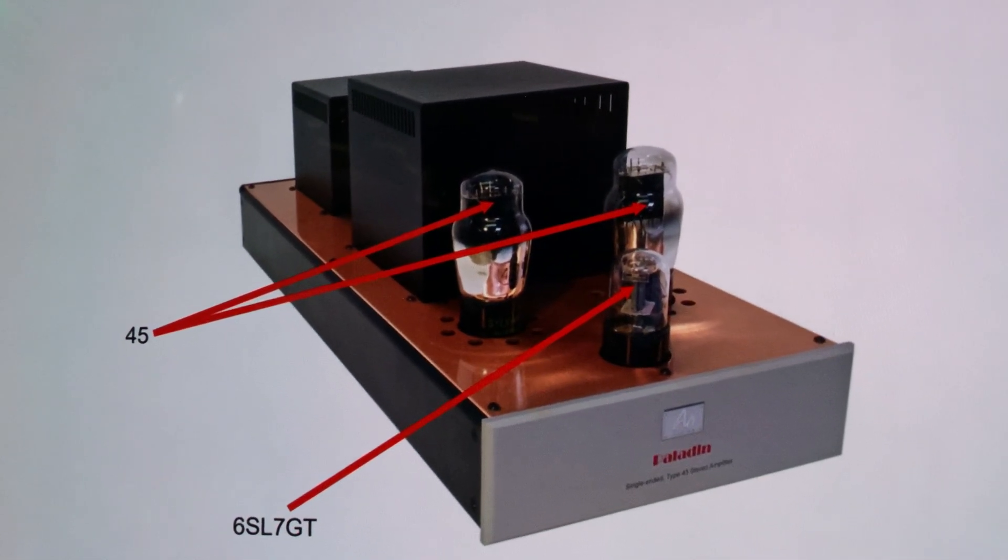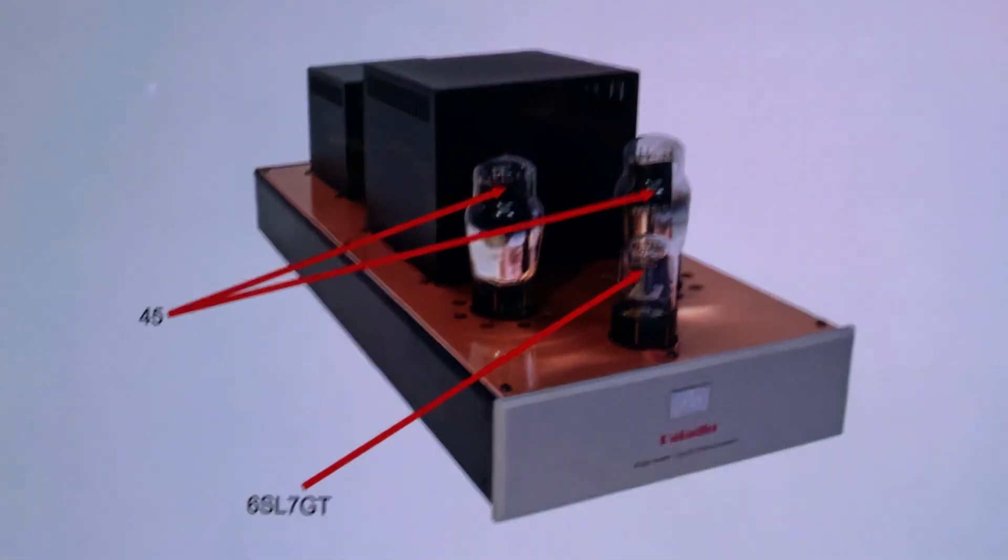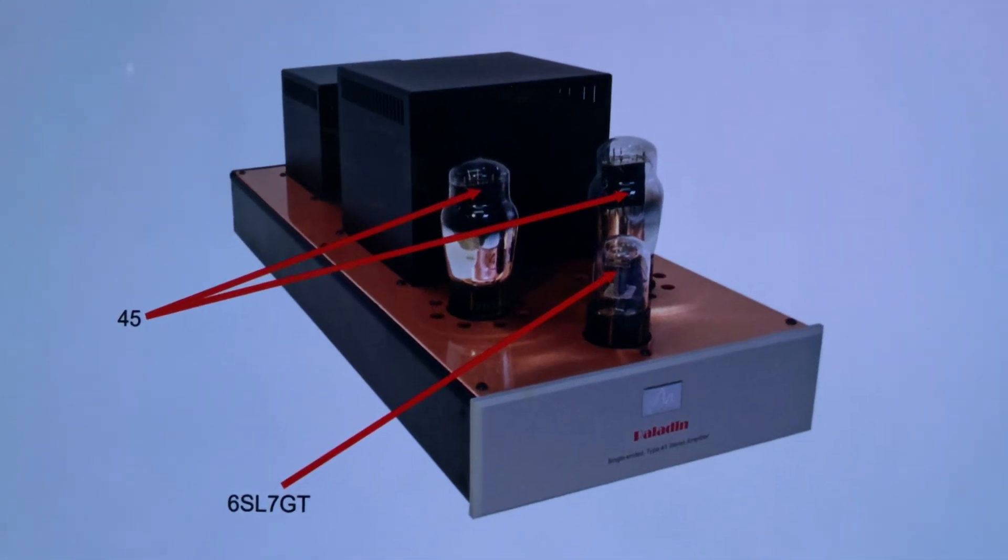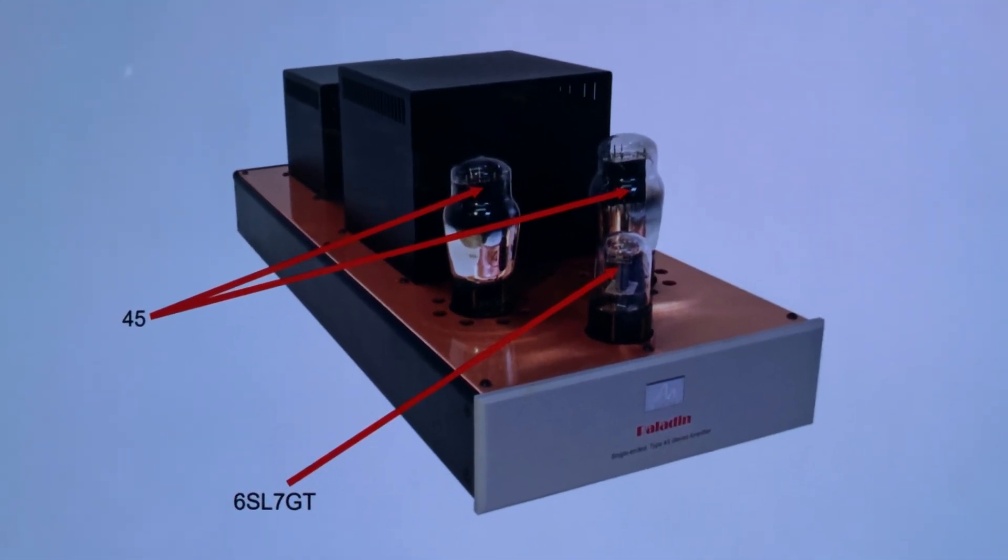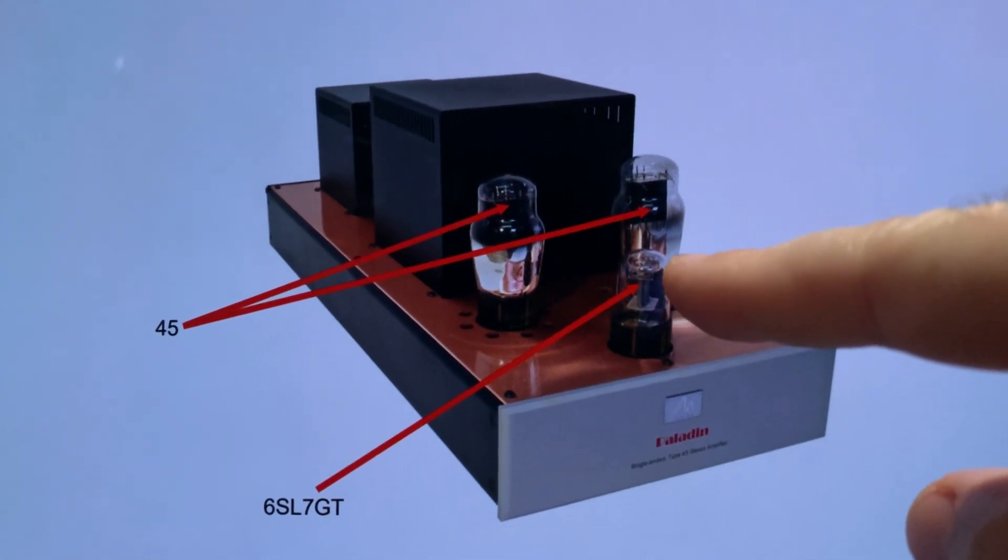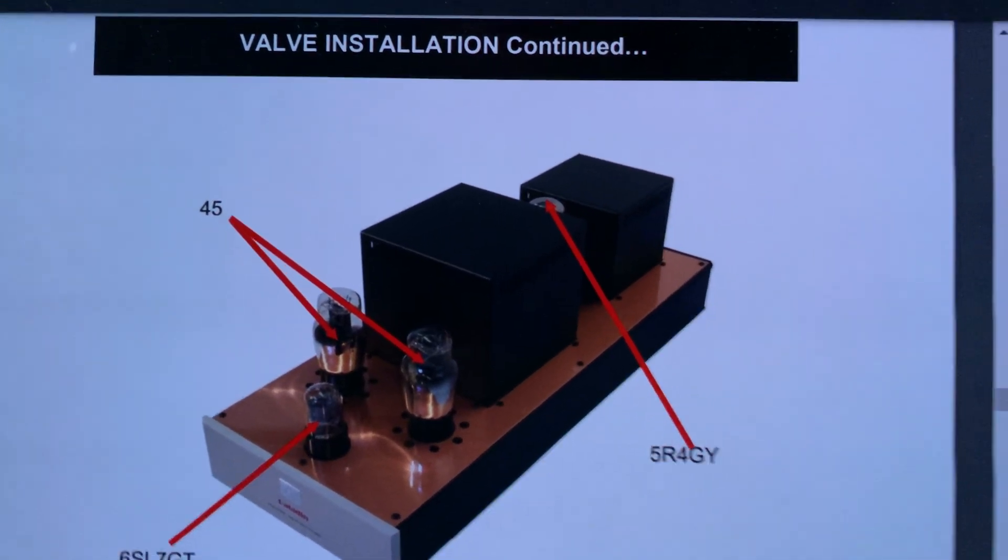So this is a free power amplifier made by Audionaut using the type 45 tubes. These are the 45s which are low power direct heated tubes, 2 watts each, and it's driven by a 6SL7 and the rectifier tube is a 5R4GY.